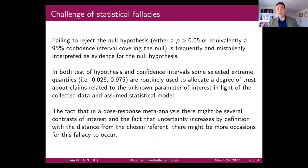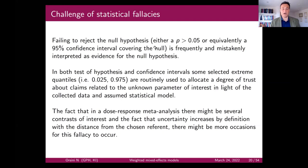Another challenge is the classical statistical fallacy: failing to reject the null — a p-value greater than 0.05 or a confidence interval including the null — is frequently and mistakenly interpreted as evidence for the null. This is true for a single study and also true for a meta-analysis.